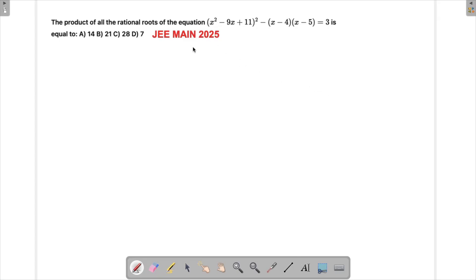Alright, so let's solve a problem which appeared in JEE Main 2025. In this question we have been asked to find the product of all the rational roots of this equation. As you can see, this is already quadratic and then there is a square here, and then there are two things which are multiplied. So we need to find out all the roots. There will be multiple roots if this is how it is.